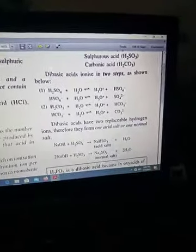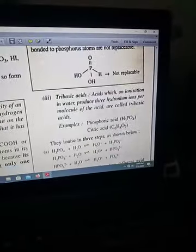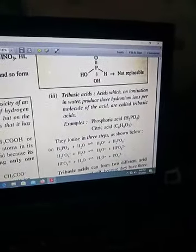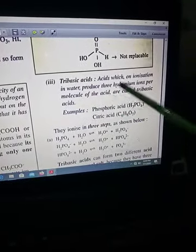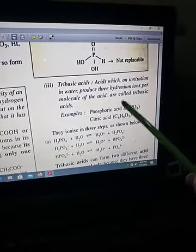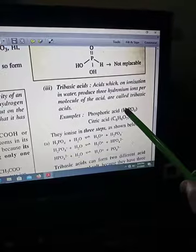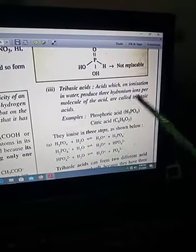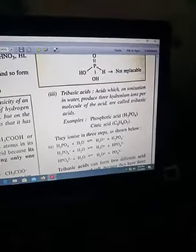Similarly, tribasic acids on ionization in water will produce three hydronium ions, or three H+ ions. For example, in H3PO4 we have three hydrogen atoms, so on ionization it will give you three H+. They are called tribasic acids.